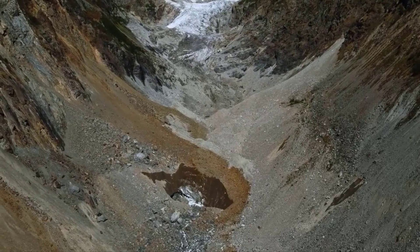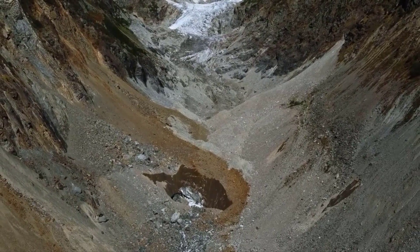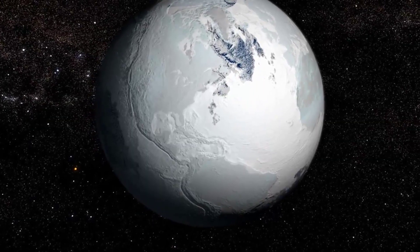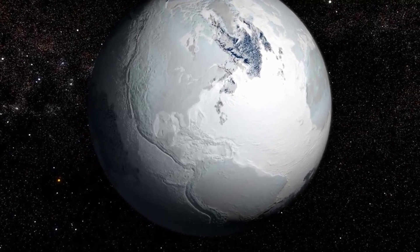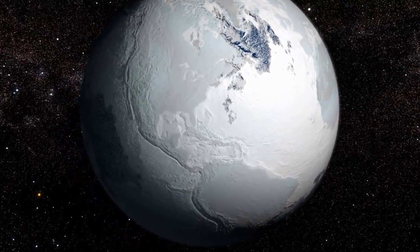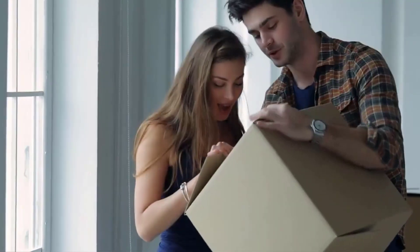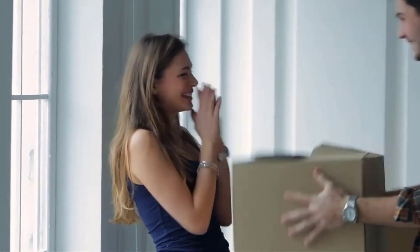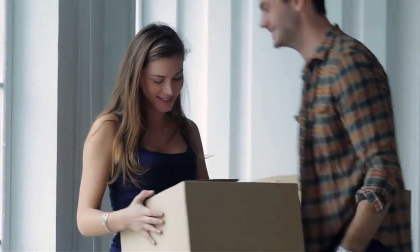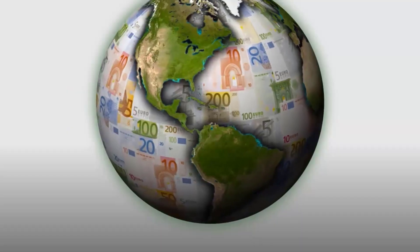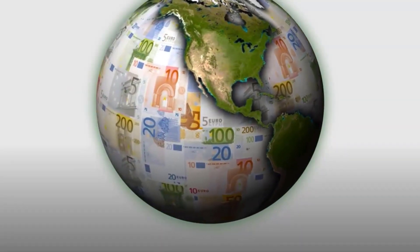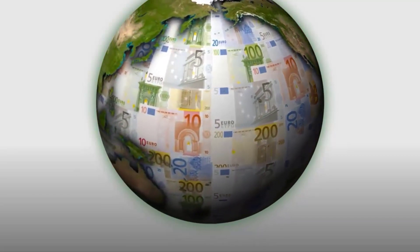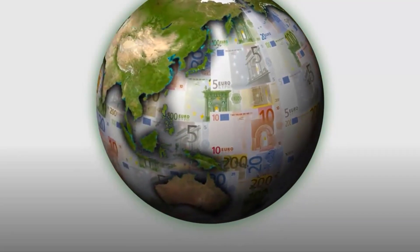Welcome to our channel today. We delve into how Earth will change if all the ice melts. Imagine a world where all of Earth's ice melts, flowing into the ocean and reshaping our planet's landscapes. We embark on a journey to explore the dramatic changes that would unfold if this scenario became a reality — from altered coastlines to shifts in Earth's rotation — delving into the fascinating science behind these potential transformations.